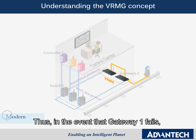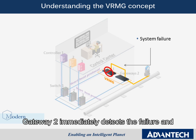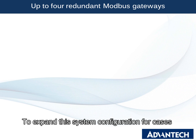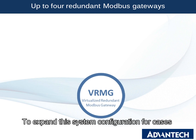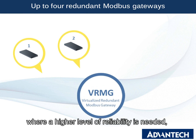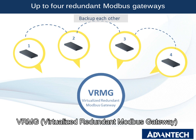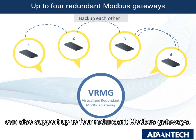Thus, in the event that gateway 1 fails, gateway 2 immediately detects the failure and claims the ownership of the virtualized IP. To expand the system configuration for cases where a higher level of reliability is needed, VRMG can also support up to 4 redundant MOBA's gateways.